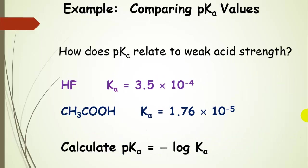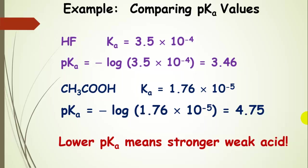What about pKa? Let's calculate pKa for each of these acids. For hydrofluoric acid we get 3.46, and for acetic acid we get 4.75. We already know hydrofluoric acid is the relatively stronger weak acid, and it has the lower pKa. A lower pKa value means the weak acid is stronger relative to others.